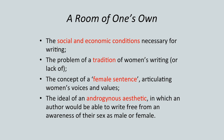She talks about the concept of a female sentence — Woolf's idea of a style or form of writing that might particularly articulate women's voices and values. And finally, she turns to the ideal, and it remains an ideal always for Woolf, of an androgynous aesthetic: the idea of a mode of writing in which an author can write free from any awareness or preoccupation of their sex.